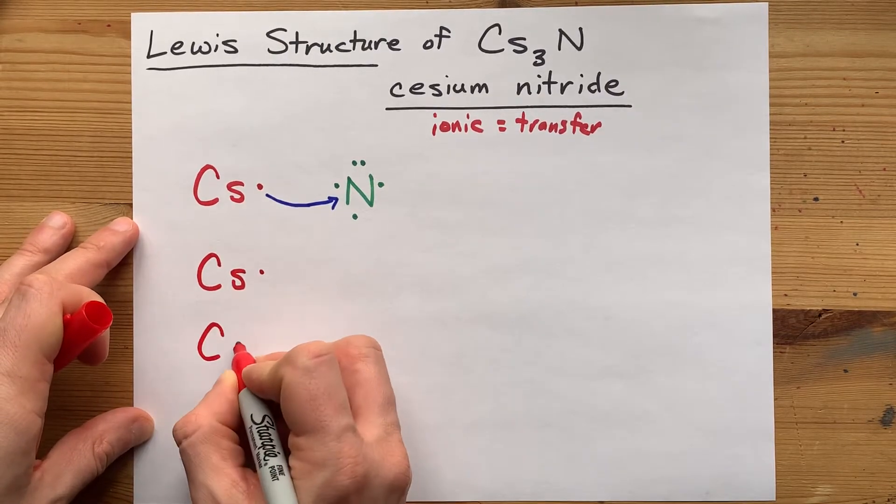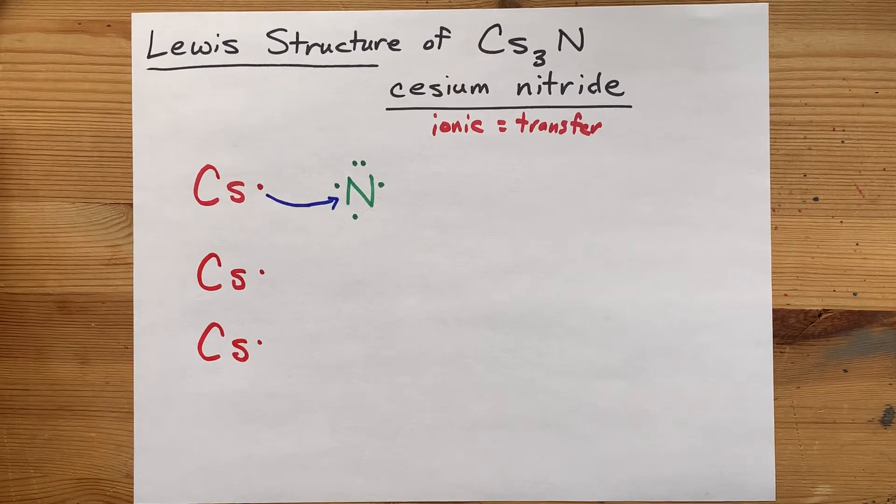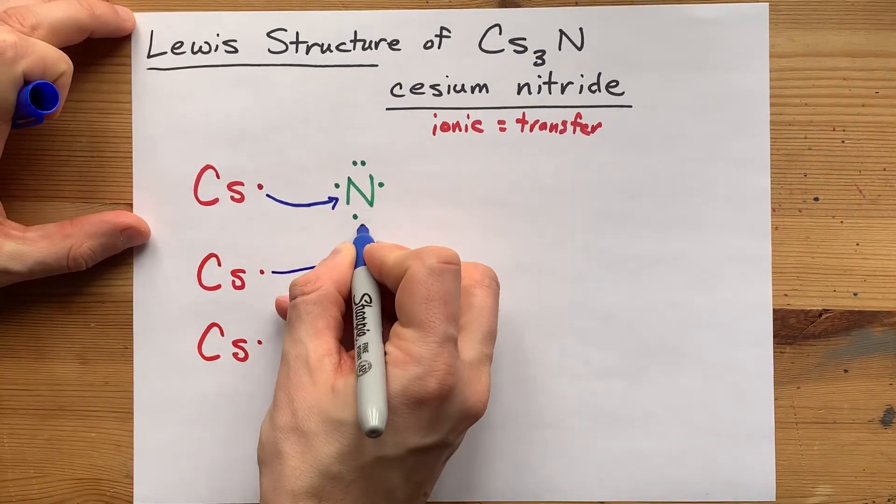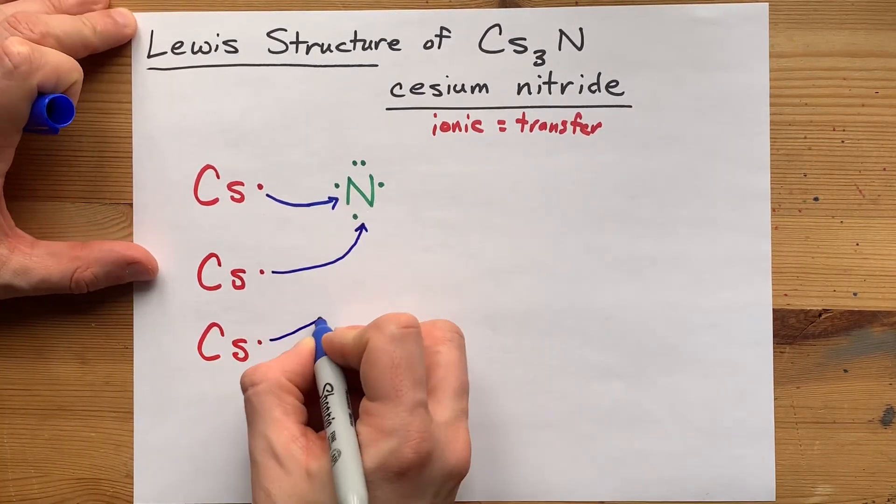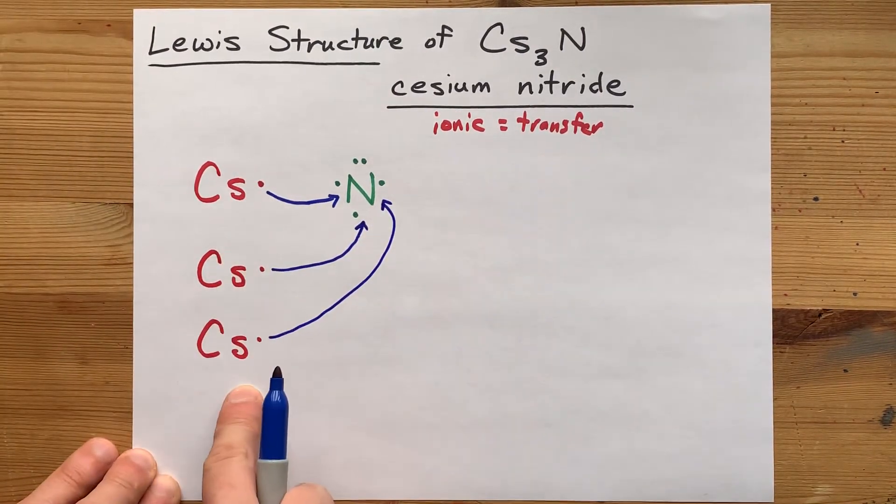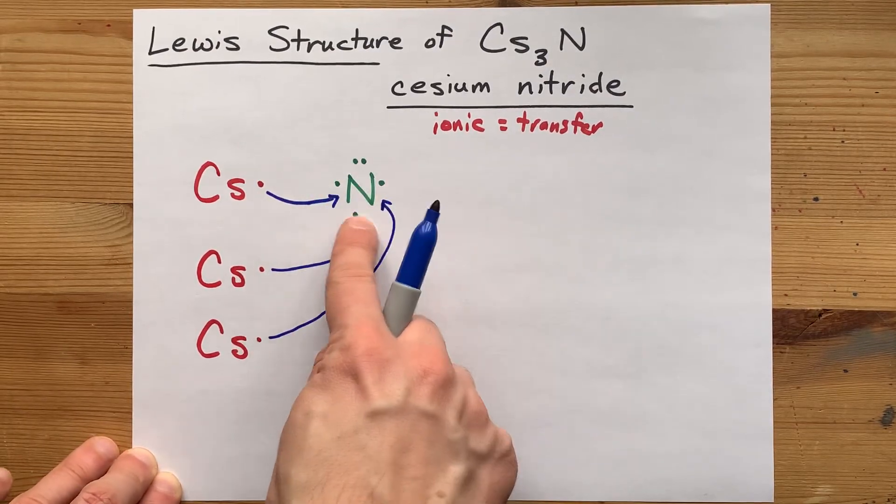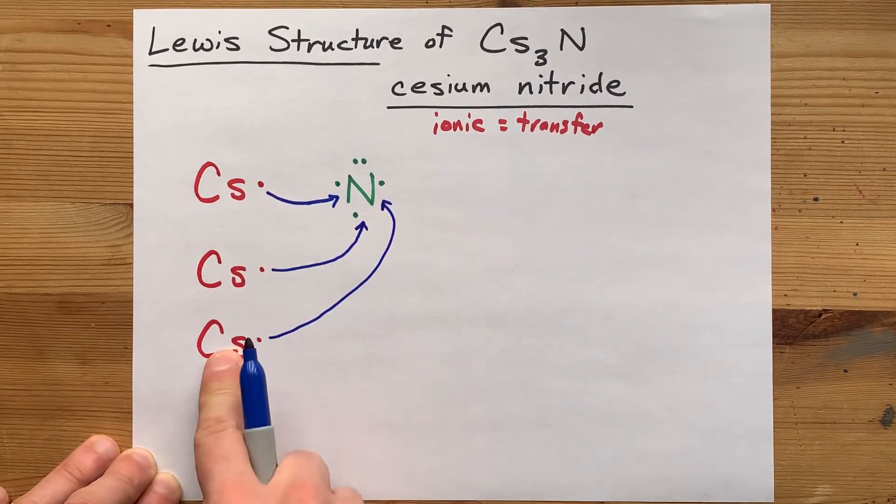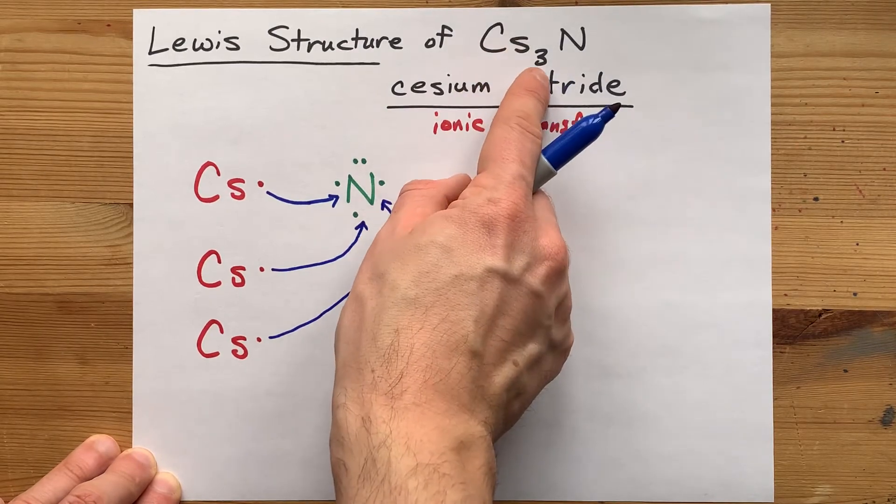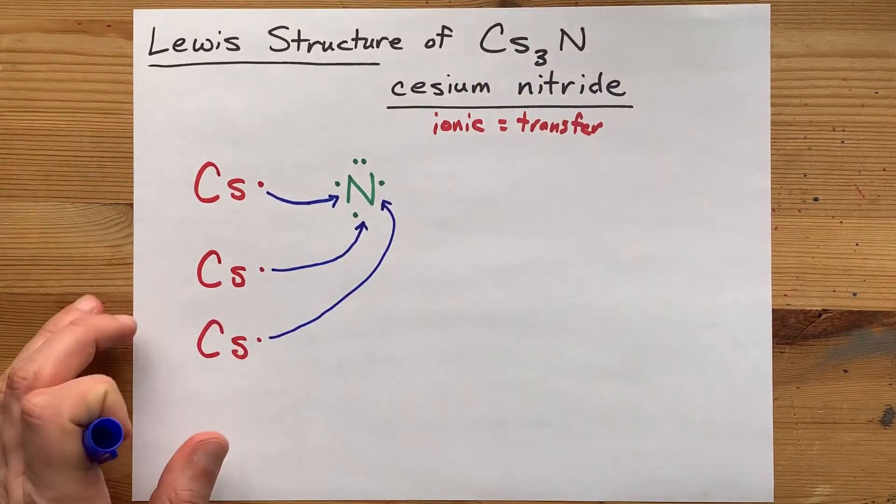You can draw as many as you need to complete the octet on the non-metal. This cesium atom donates its electron, and this cesium atom donates its electron. That is three cesiums giving away one electron each to complete the octet on nitrogen. That's why the formula is CS3N, because you need three of these to complete the octet on nitrogen.